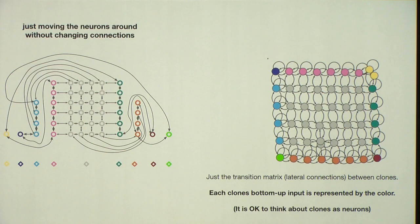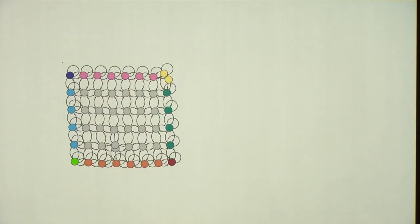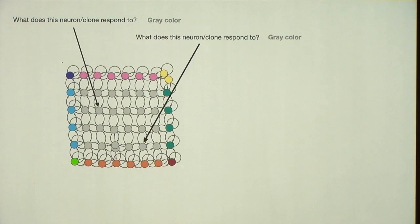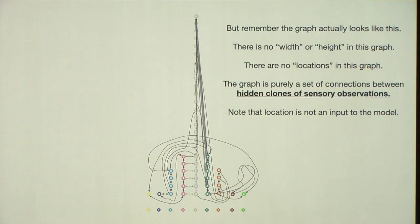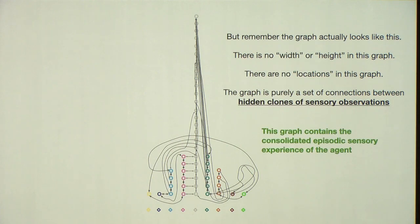Each observation is hardwired to the same color. I'm not showing those connections. And initially this lateral connections are random. I'm not showing those connections, but now after learning, which is we use EM algorithm to learn these lateral connections. This is what the graph ends up being. This is the actual graph. That's same as this graph. I just deleted the unused nodes. You can just rearrange those graph. And that's what it looks like. This is the graph that I showed you earlier. This is saying that this is the layout of the room. Now I can ask the question, what does this neuron or a clone respond to? It responds to the gray color, right? That's what it responds to. What does this neuron respond to? It also responds to the gray color. But the important thing in mind is that each of them are responding to the gray color in that particular sequential context.